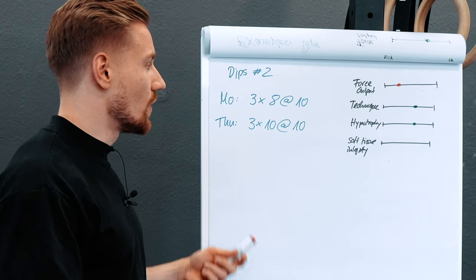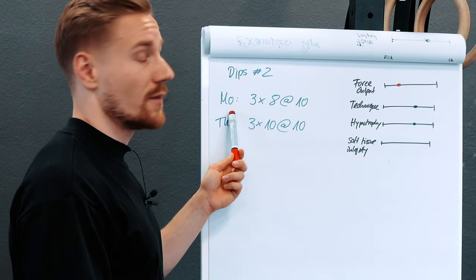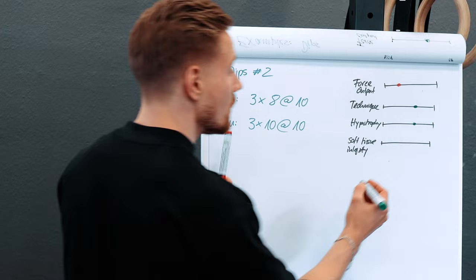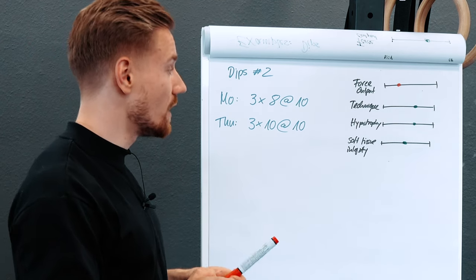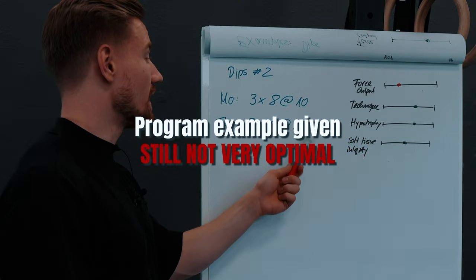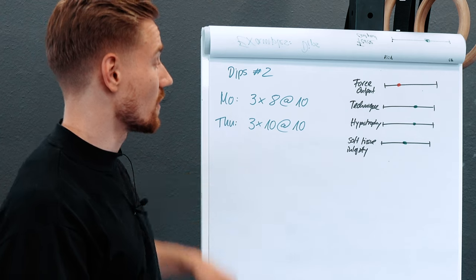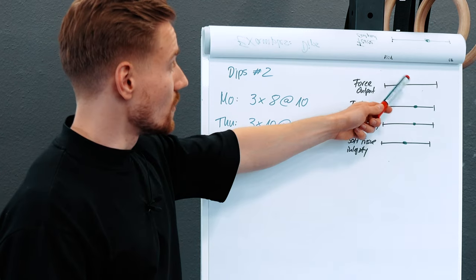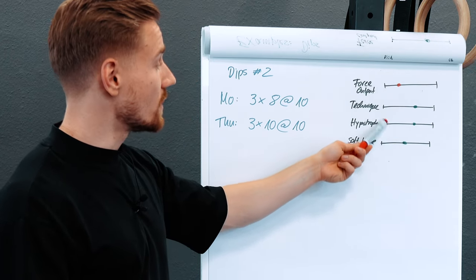For soft tissue integrity, training twice a week with moderate loads but very close to failure puts us somewhere in the middle. You can do that for a couple of weeks without needing to deload, but it's still not optimal because the last couple of repetitions — especially for a really strong athlete — can cause a lot of damage. Over a period of several weeks that accumulates.